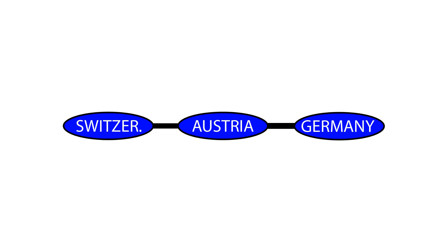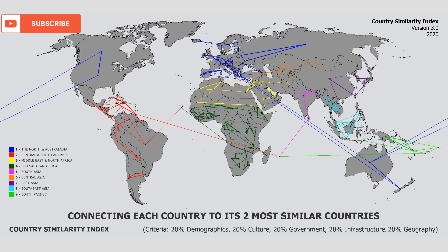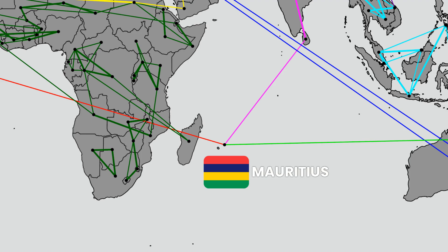By linking each country to its two most similar counterparts, a unique picture emerges. This map of the world shows that some countries connect to two different regions or two different continents. In fact, Mauritius is particularly unique since it is connected to three different world regions.